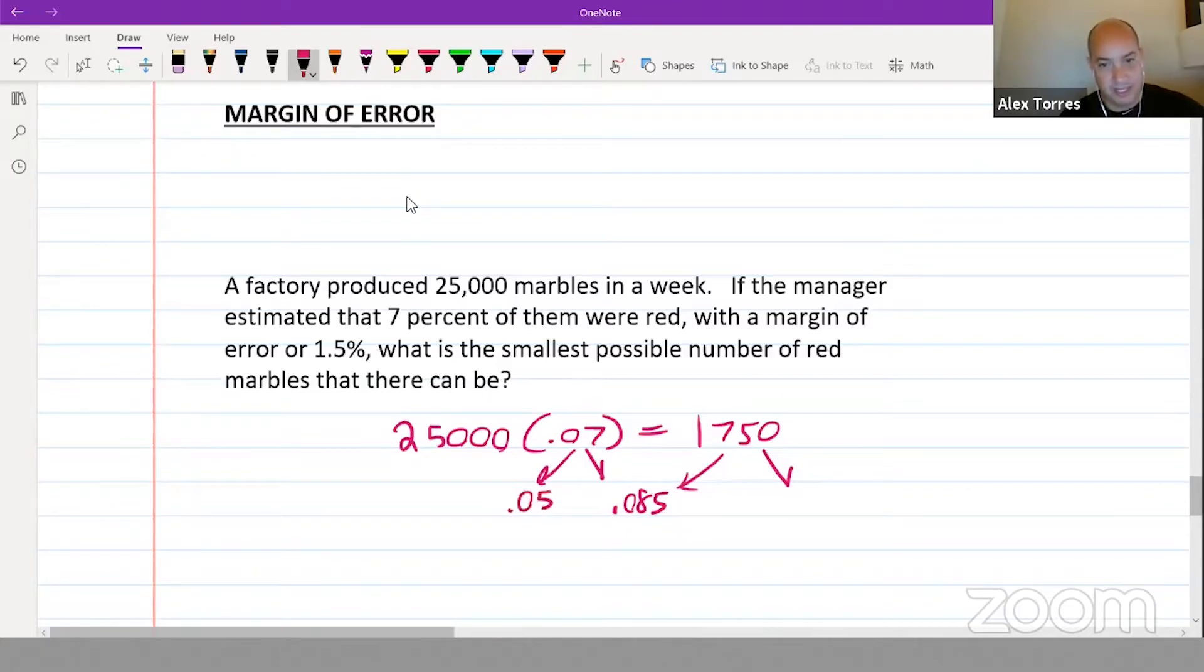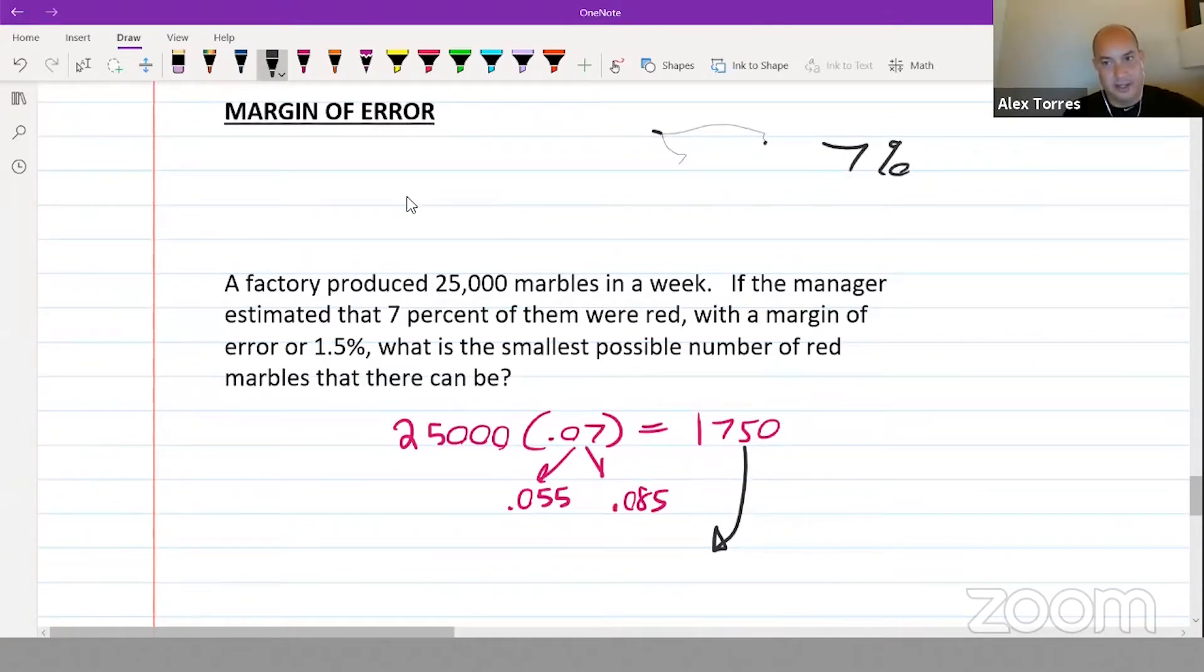So we could have gotten numbers that were 5.5% of 25,000. In other words, we have the 7%, but that 7% can be taken down by 1.5%.